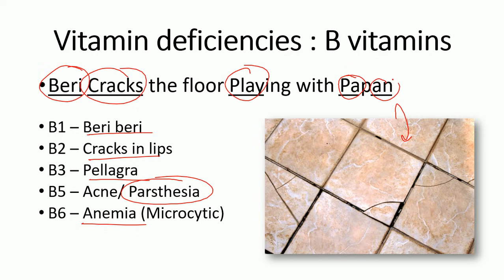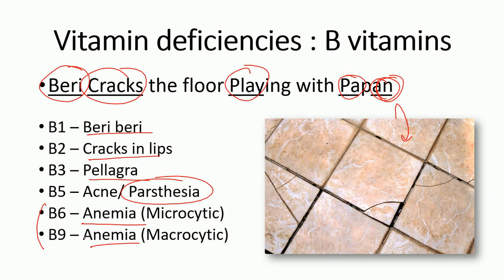Vitamin B6 deficiency causes anemia — starting with 'AN'; vitamin B9 also causes anemia, but the key difference is that B6 anemia is microcytic anemia while B9 anemia is macrocytic anemia. Remember we go through B1, B2, B3, then B5, B6, and B9 in sequence — not all numbers from 1 to 9. That's how easy it is to remember all the vitamin B deficiencies.